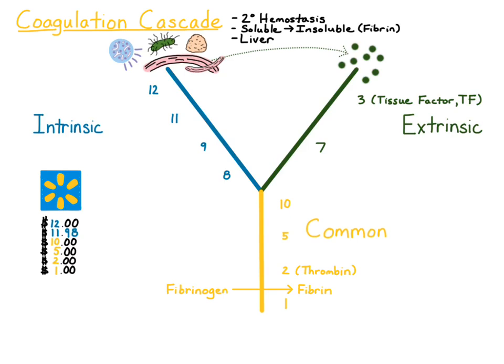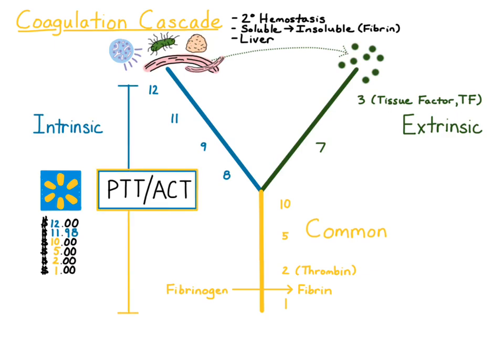Now I'm going to talk about the tests we use to assess these pathways. First, the PTT and the ACT tests. Both of these tests evaluate the intrinsic and common pathways — how long it takes a clot to form after activation of the intrinsic pathway, evaluating factors 12, 11, 9, 8, 10, 5, 2, to 1. PTT is measured off of citrated plasma drawn in a blue top tube. ACT is measured as whole blood in a special tube that contains clay — that same clay that activates the intrinsic pathway.